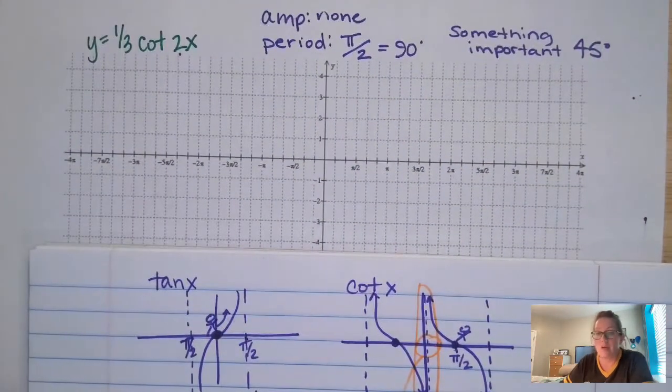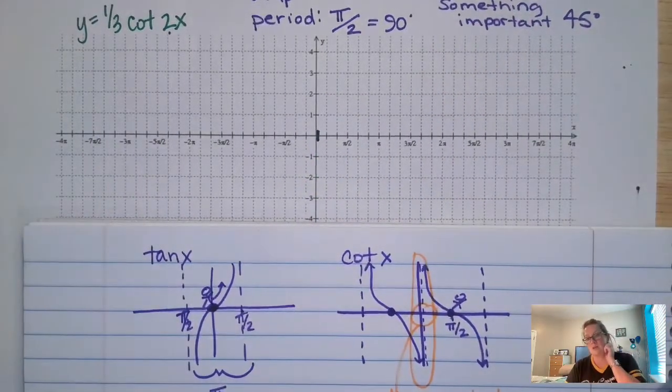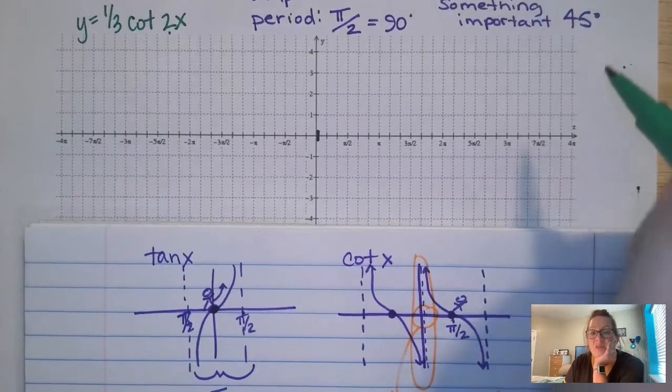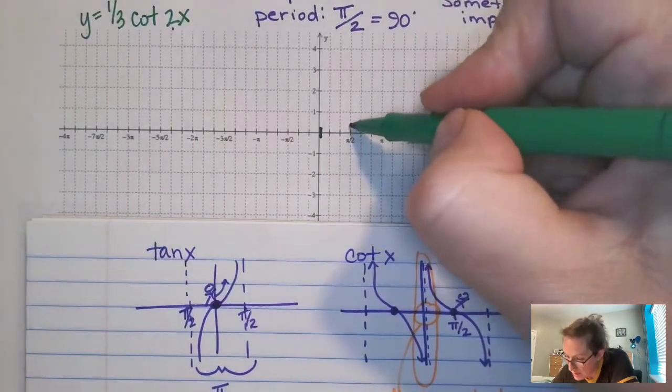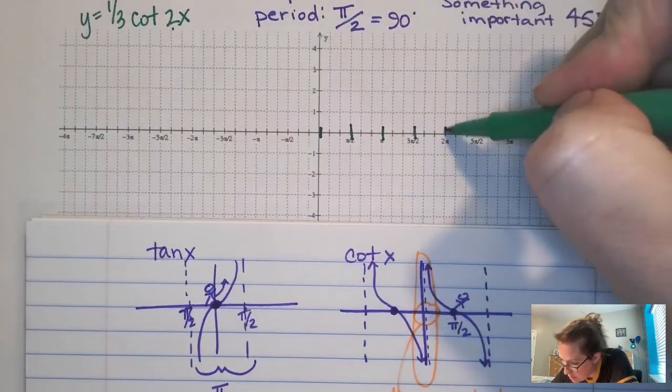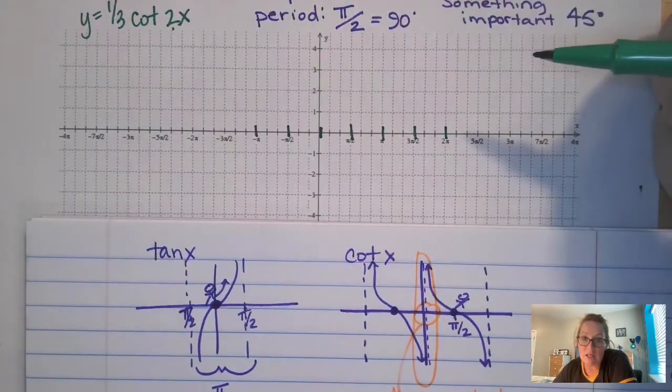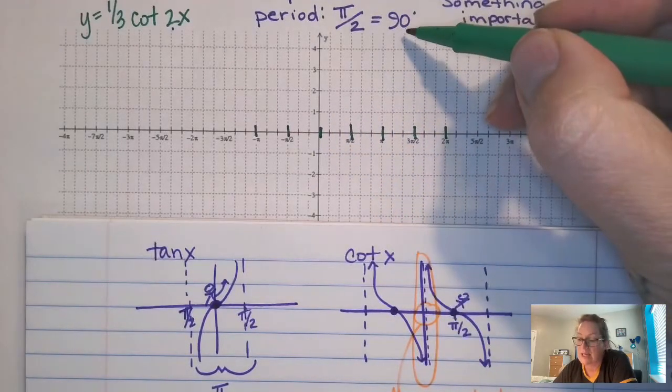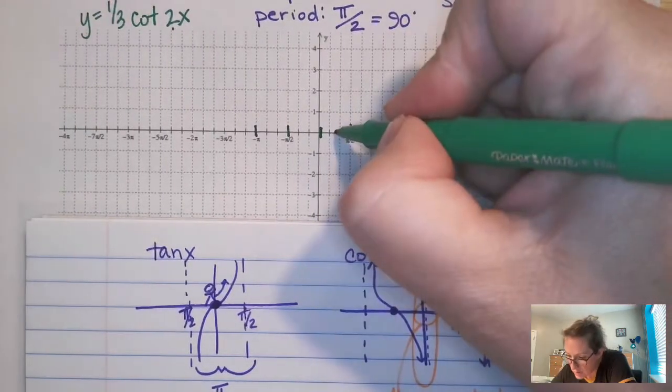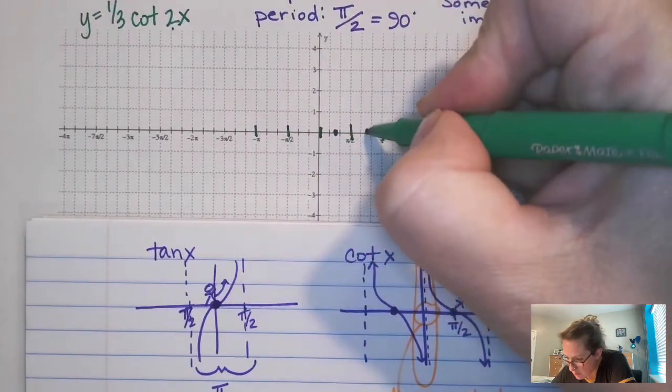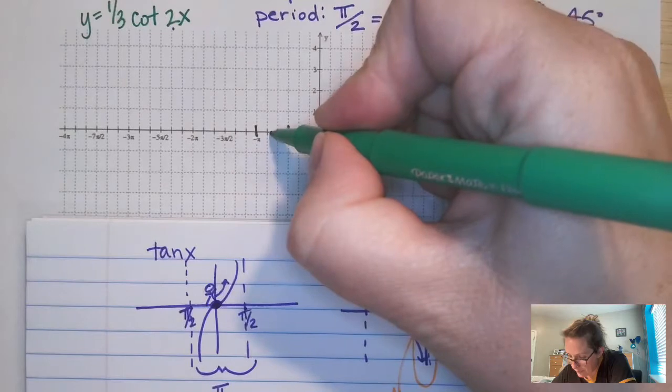So, we are still going to have an asymptote there, and I just marked the asymptotes with a dashed line. And we have a period of 90, so that means we're going to have an asymptote every 90 degrees. So, an asymptote, an asymptote, an asymptote. And then halfway between our periods or our asymptotes is going to be a zero. So, halfway between 90 is 45. So, we're going to put a zero halfway between those, which is one and a half units on this graph.